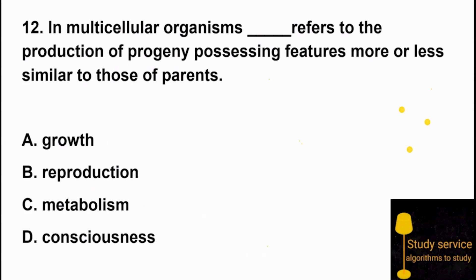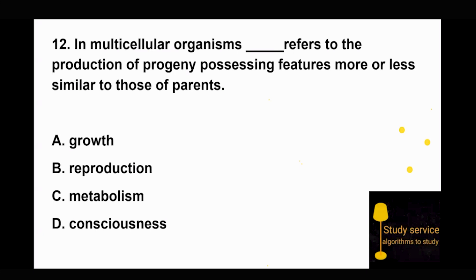Question 12: In multicellular organisms, what refers to the production of progeny possessing features more or less similar to those of parents? The answer is reproduction — multicellular organisms produce progeny that are similar to their parents through reproduction.